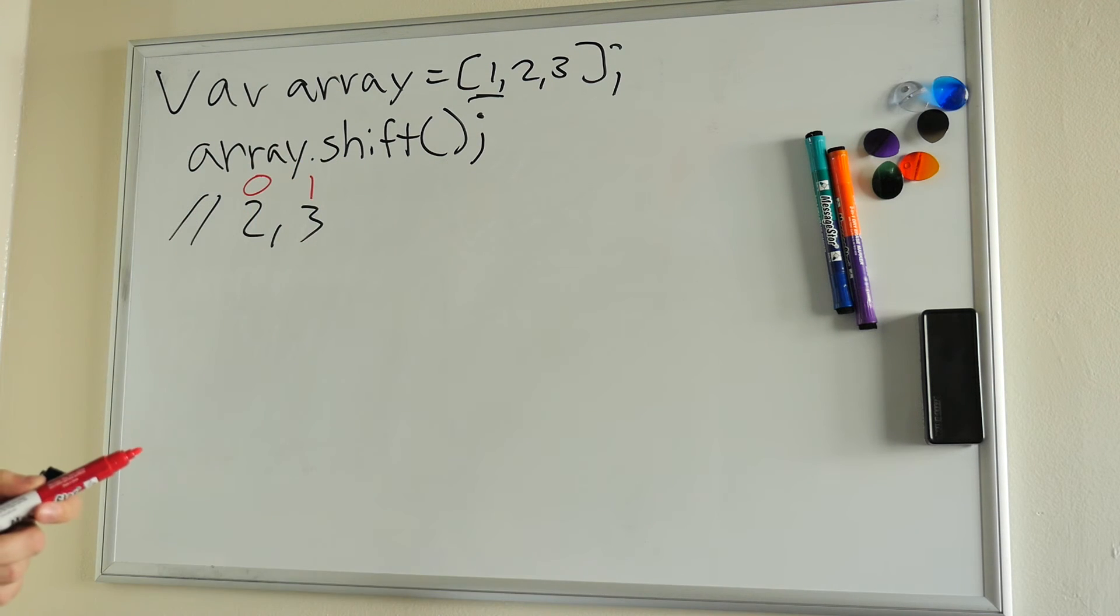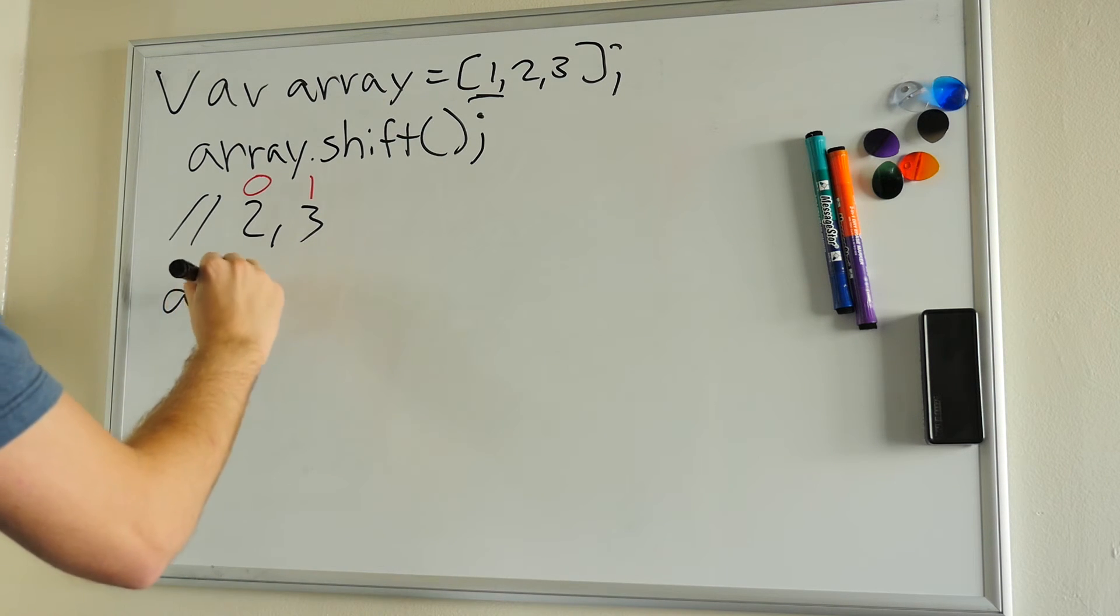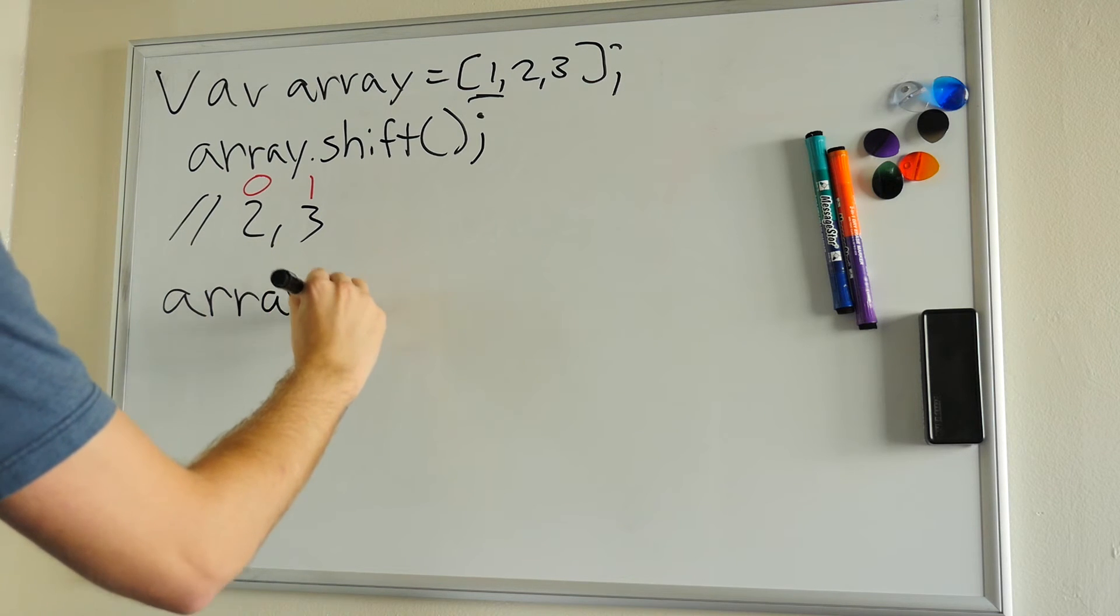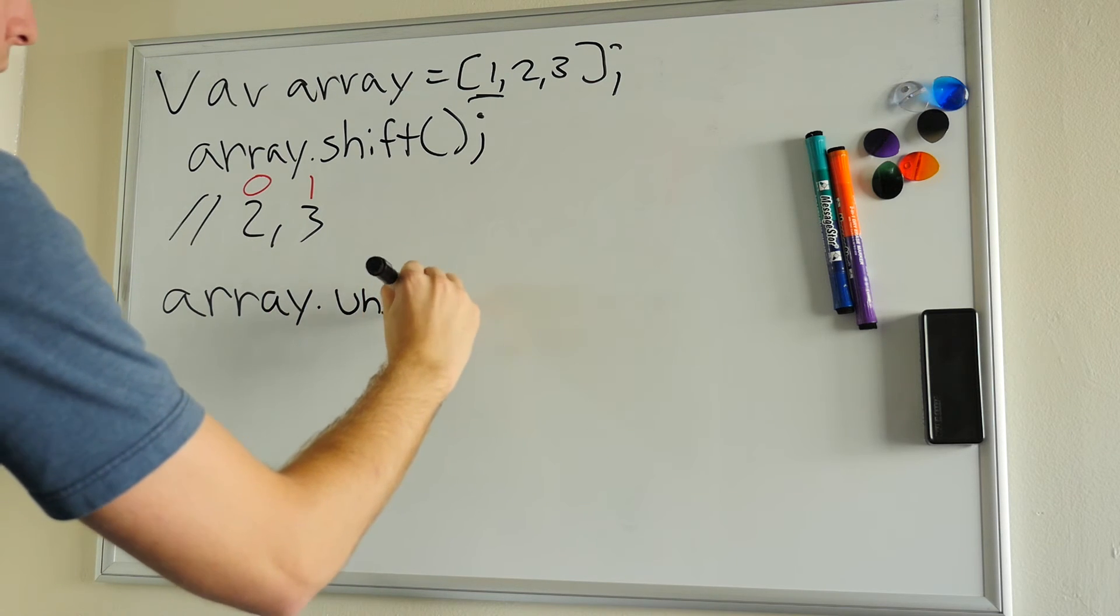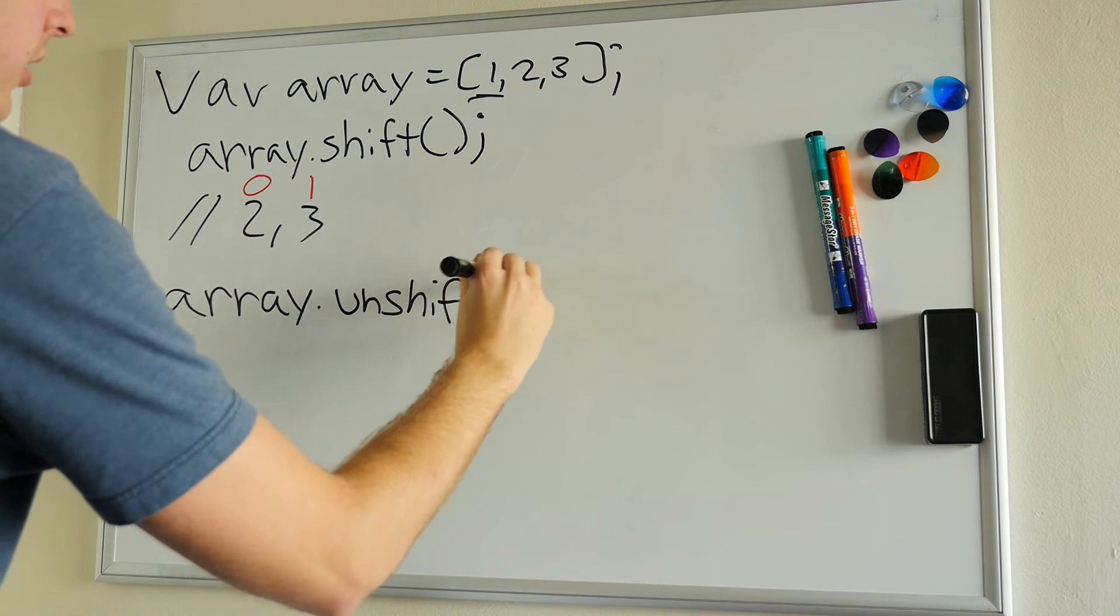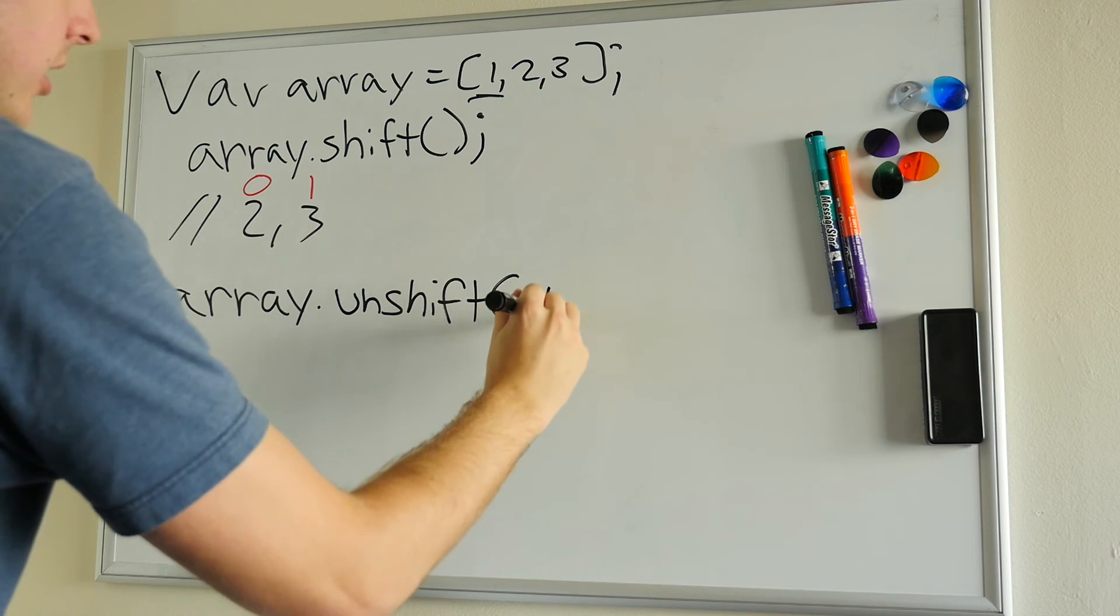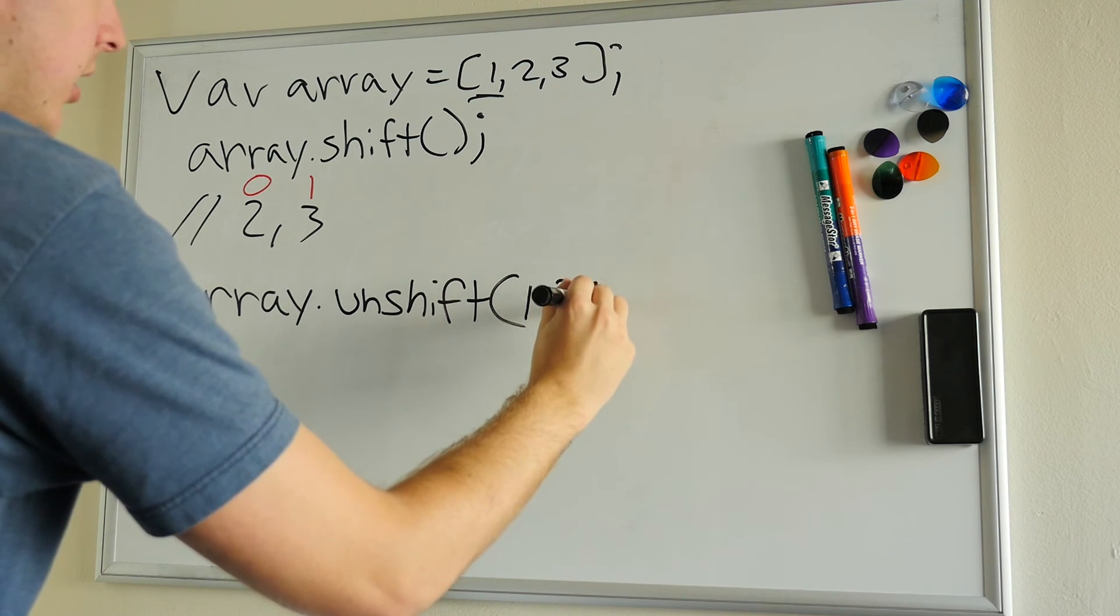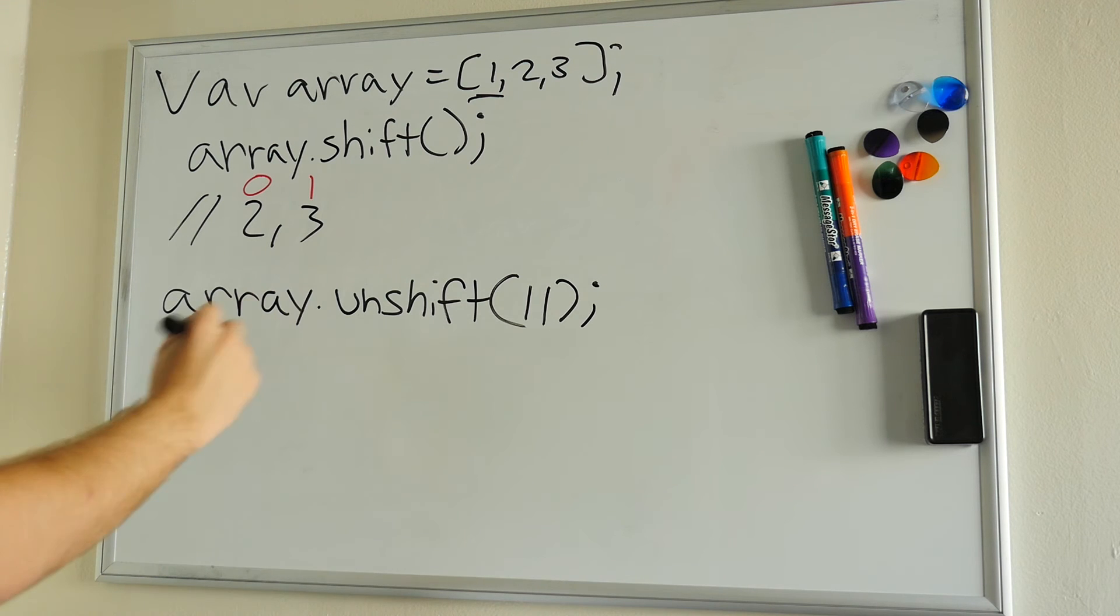In this case, we're actually going to put a number back into the array starting at the first value, and then it will shift all the others to the right. Let's go ahead and call array.unshift(11). Now what's going to happen is our output would be 11, 2, 3.